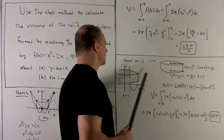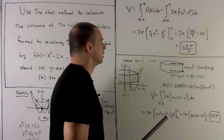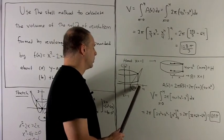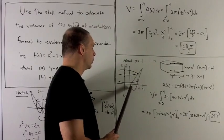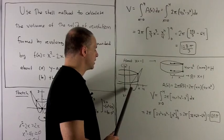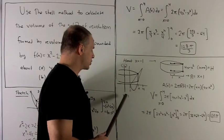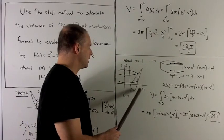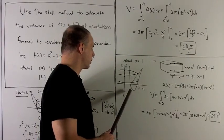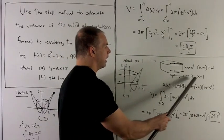The height won't change at all. It's still top function minus bottom function. So the height is still 4x - x². What will change is the radius. Before, we used the radius of x because that's the distance from the point x to our axis of revolution, which was at x = 0. So the distance from 0 to x is just x. Now we're going from x to the axis of revolution at x = -1. So the distance is going to be the distance from 0 to x plus the distance from 0 to -1. Well, that's going to be x + 1.